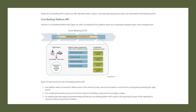Let us dive deeper into the core banking platform ART. The first ART in core banking DVS is the core banking platform ART that you are seeing in this picture, which is comprised of four platform teams, four complicated subsystem teams, and one enabling team. The four platform teams are formed for different parts of the customer journey, like new account creation, account closure, and payment processing. For payment processing we have two agile teams. All four platform teams are going to service different core banking functionalities like retail banking and commercial banking. The four complicated subsystem teams are formed around shared core banking components that are highly complex.